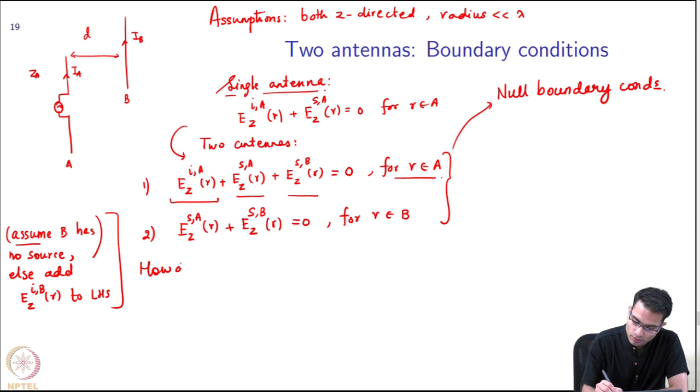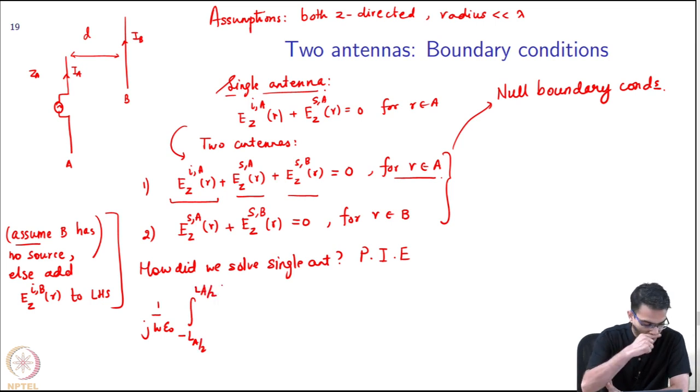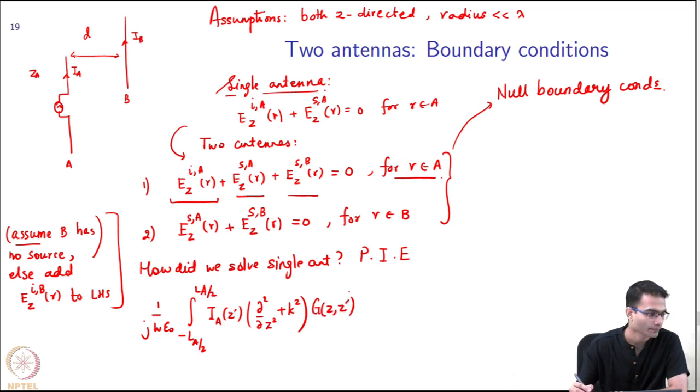Let us remind ourselves how did we solve a single antenna. It was the Pocklington's integral equation. Let me just write it down over here: integral from -L_A/2 to L_A/2 of I_A(z') [d²/dz² + k²] acting on Green's function, which was a function of (z, z'), dz'. And this whole thing was equal to, by boundary condition, equal to -E_z^incident(z). This was our very simple thing.